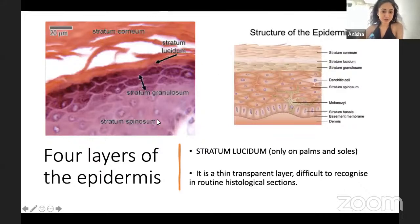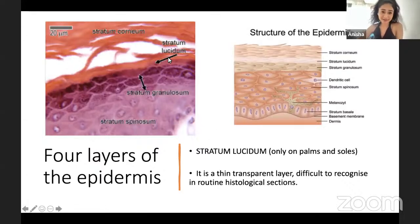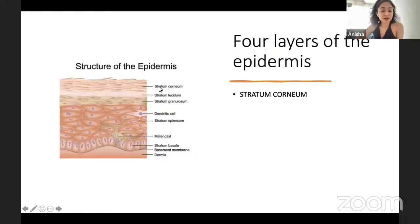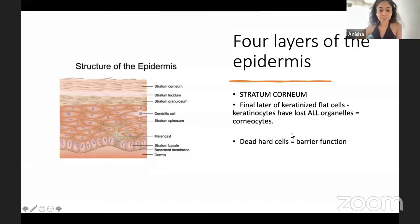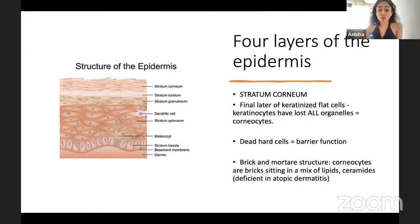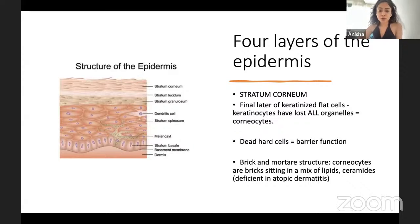The stratum lucidum is a very thin layer only found on the palms and soles — you can barely see it. The final layer is the stratum corneum, made of fully keratinized dead cells called corneocytes that have lost all organelles and nuclei, giving that barrier function. It's described as a brick-and-mortar structure: corneocytes as bricks sitting in a mixture of lipids and ceramides. In eczema, deficiency of ceramides and lipids causes the dry, flaky skin.